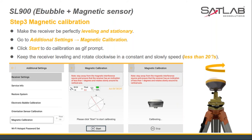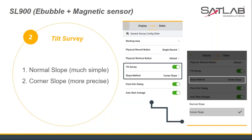The third calibration is the magnetic calibration. Keep the receiver level and stable, then click Start in the additional settings magnetic calibration option. Rotate the receiver clockwise at a speed of no more than 20 degrees per second, and the software will confirm successful calibration. After completing all three calibrations, the tilt survey function can be used. It needs to be enabled on the data page in the configure option of the detail survey page. Users can choose normal slope or corner slope mode — the former is simpler and the latter is more precise.